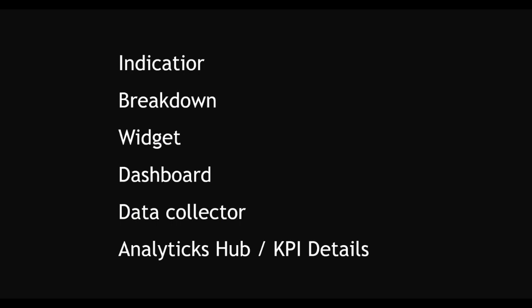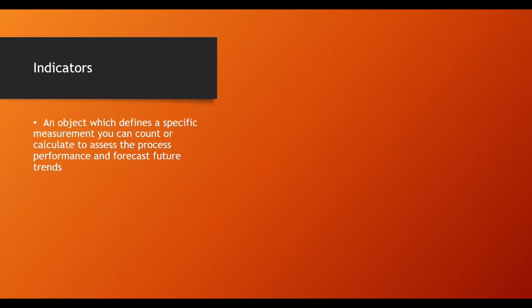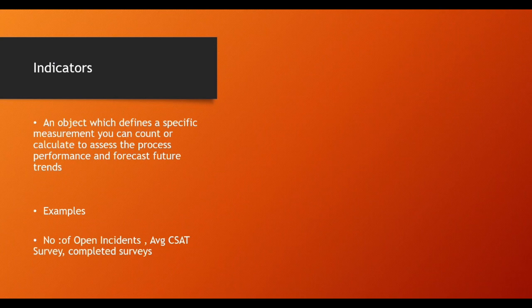First: Indicators. An indicator is an object which defines a specific measurement you can count or calculate to assess the progress of performance and forecast future trends. For example, number of open incidents, number of SLAs, average SLA count — all these are called indicators. Examples include number of open incidents, average customer satisfaction survey, completed surveys.